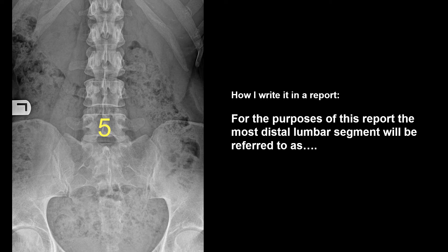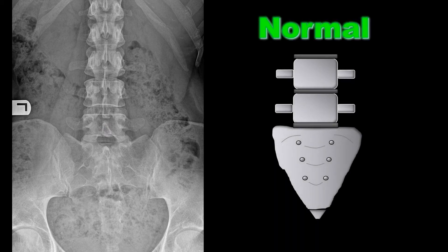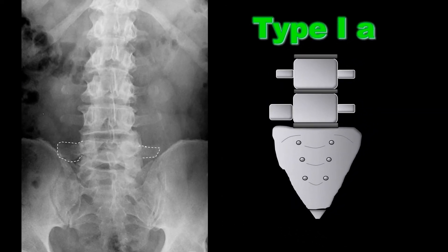Here we have a totally normal lumbar spine on the left and an animation on the right showing the lumbosacral junction. Looking at this X-ray, there are five lumbar segments. The transverse processes of L5 are totally normal in size and shape, and the sacrum is as well. There's normal morphology of both the distal lumbar segment and sacrum, so there's no lumbosacral transitional segment here — totally normal lumbar spine.